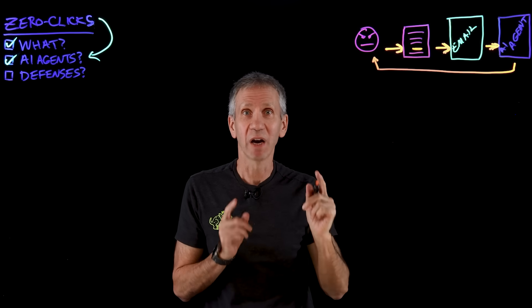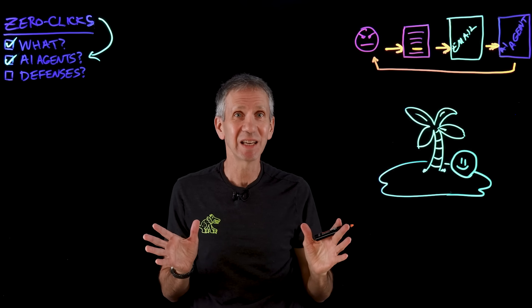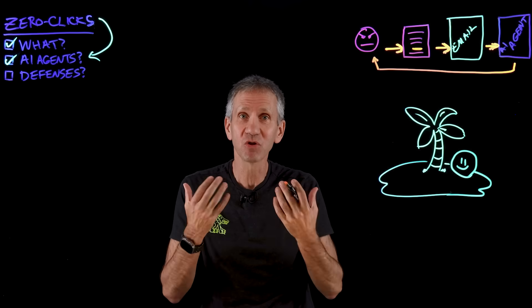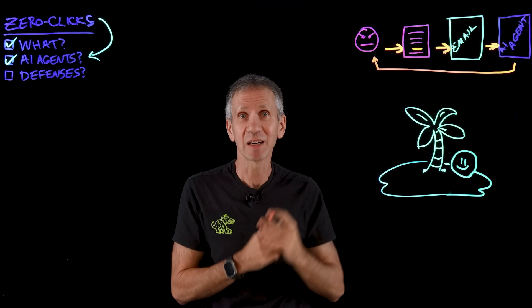Zero click — the user had nothing to do with this. There's nothing you can train a user to do that will prevent this attack. It's a vulnerability in the agent itself. You might say that particular vulnerability was already fixed — and that's true. But there will be more of these. And even if you don't use that particular AI platform, every AI platform is potentially vulnerable to these types of attacks. I really think the worst is yet to come as attackers get more creative.